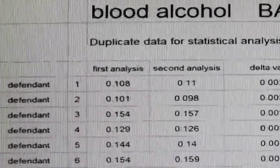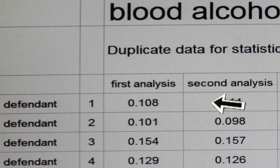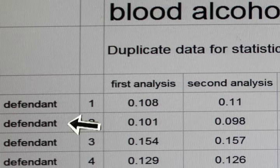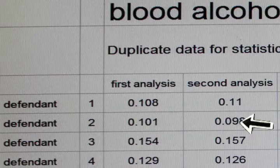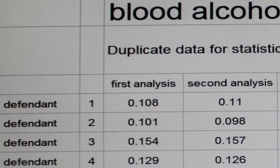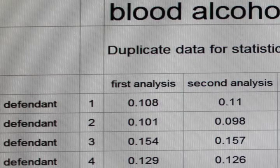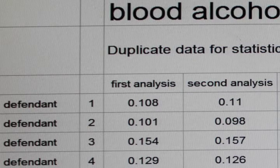So now we have the defendant's name, analysis one, analysis two. Notice how the sample has been run twice, but the results don't come out the same every time. Analytical chemistry analysis produces errors, and we can see the errors in the duplicate analysis. You run it twice, you're not going to get the same answer. They should be close, but they're not going to be the same.